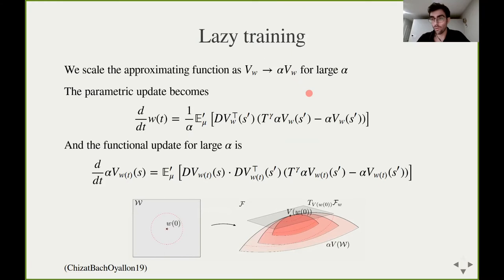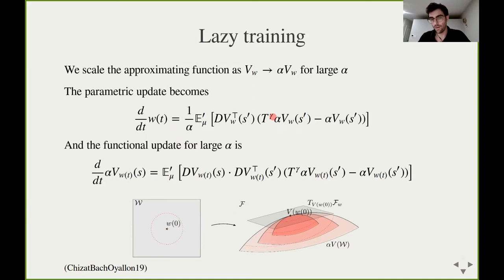To fix this, we consider a certain rescaling of the approximate value function — or a rescaling of our model — by a large scalar parameter alpha. This rescaling was introduced in a paper by Shizabach and Oyelon and has a close connection to neural networks, as I will outline in the next couple of slides. The parametric update under this rescaling reads exactly like the parametric update we had before, substituting the rescaled model, except that we rescale time by one over alpha. The reason for this rescaling is that we want the functional update to be of order one, which is obtained by applying the chain rule and simplifying the alpha factors.